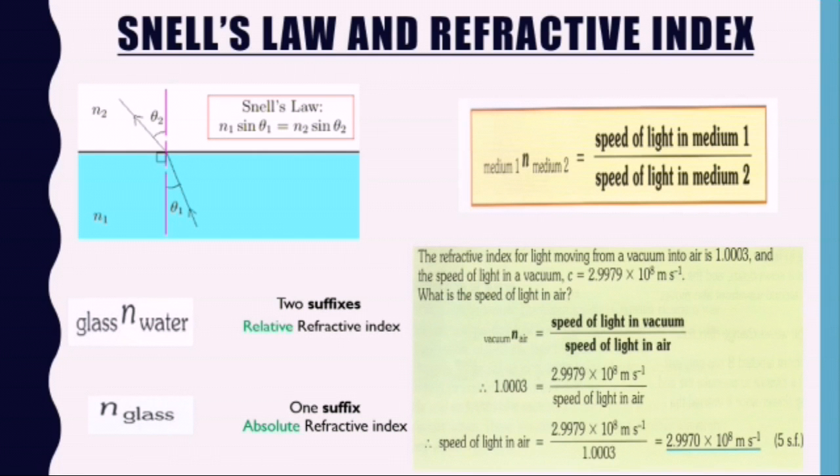Before I start this topic, I would like to give a little bit more explanation about Snell's law and refractive index that we studied in the last lesson. As I have told you already, Snell's law is n1 sin theta 1 equals n2 sin theta 2, where n1 is the refractive index of the denser medium and n2 is the refractive index of the rarer medium.